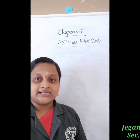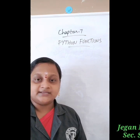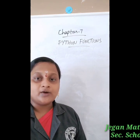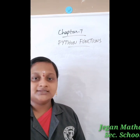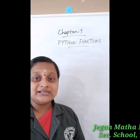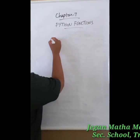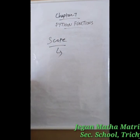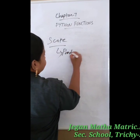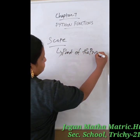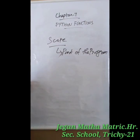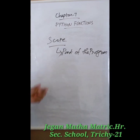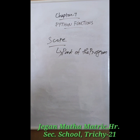Hi students. 12th standard computer science, chapter 7, Python functions. Today we are going to learn about scope of variables. Scope means it is the visibility of a variable — it refers to the part of the program where the variable is accessible and the area where we can use it. That is called the scope of a variable.